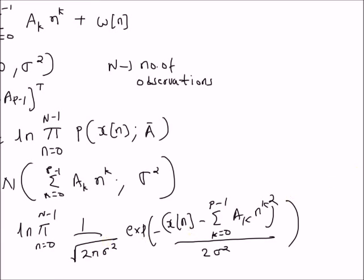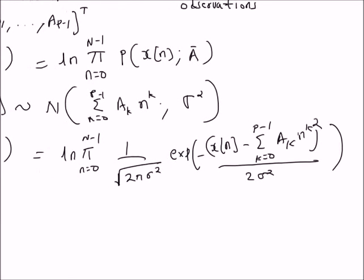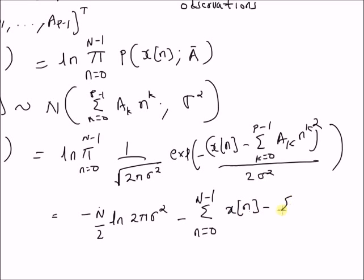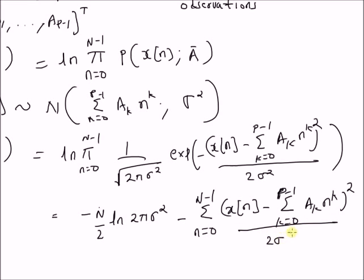Since the logarithm of a product becomes a summation of logarithms, the log-likelihood function becomes: -(N/2) * log(2π σ²) minus Σ_{n=0}^{N-1} (x(n) - Σ_{k=0}^{p-1} a_k * n^k)² / (2 σ²). This is the log-likelihood function.